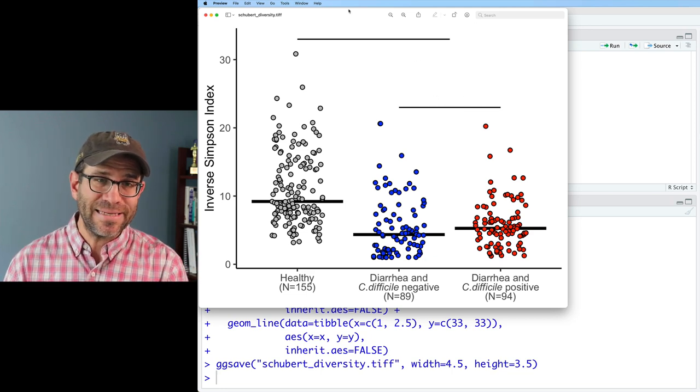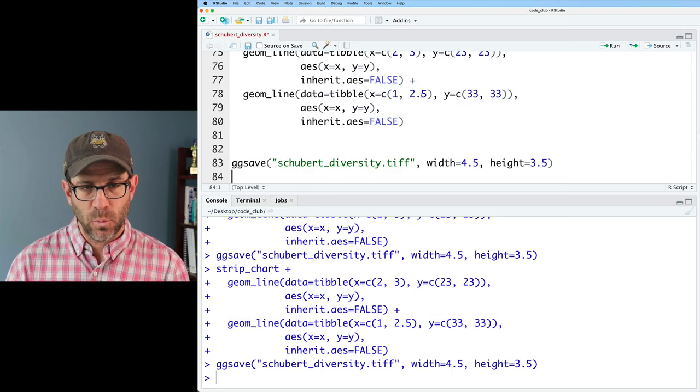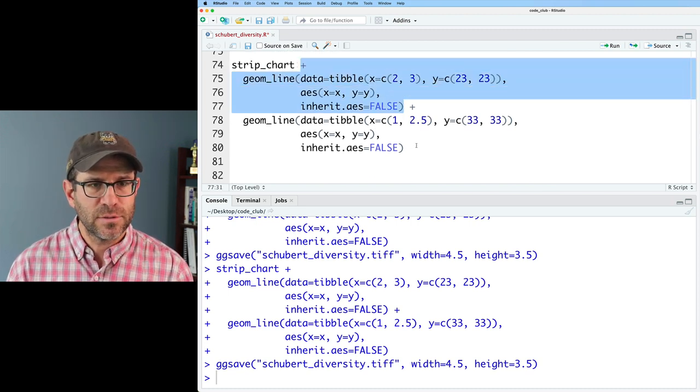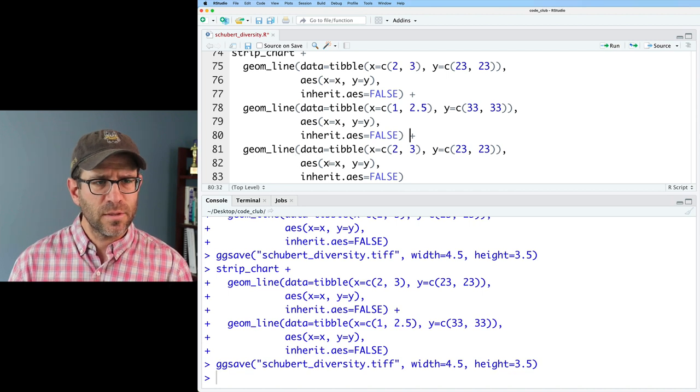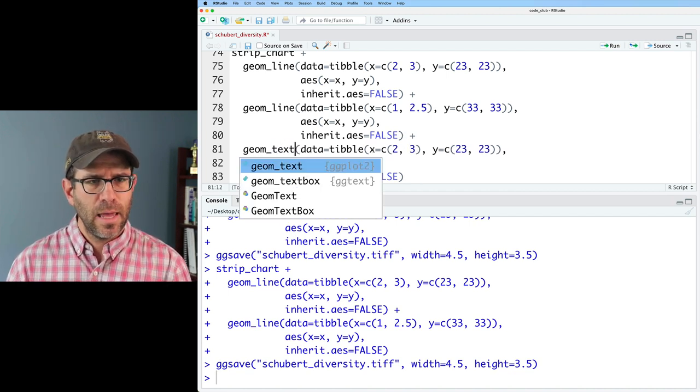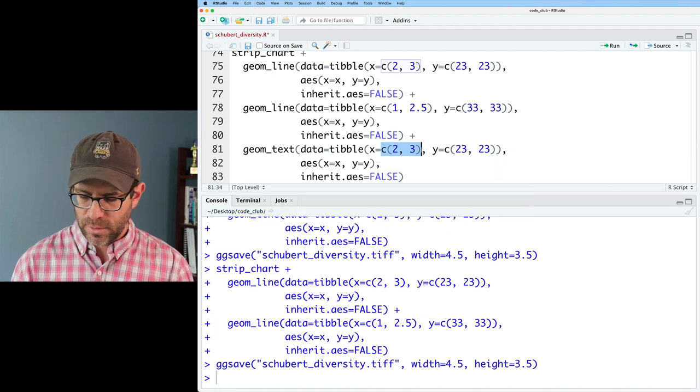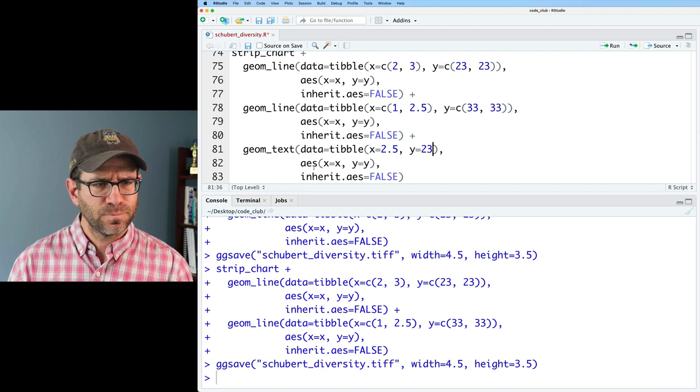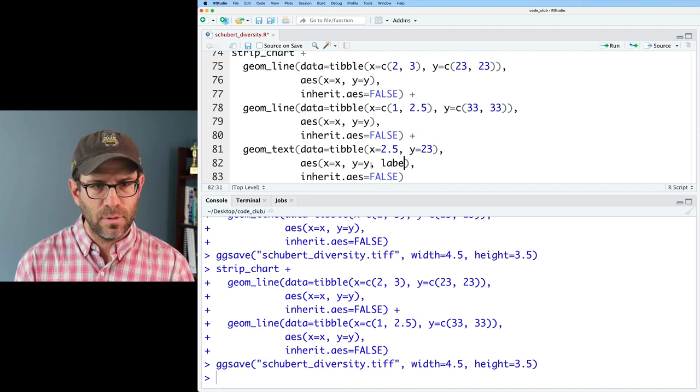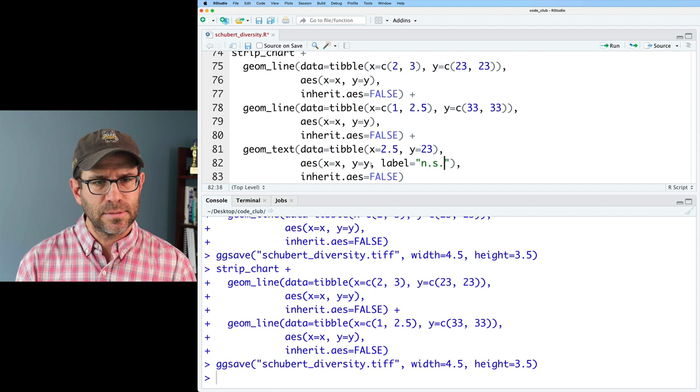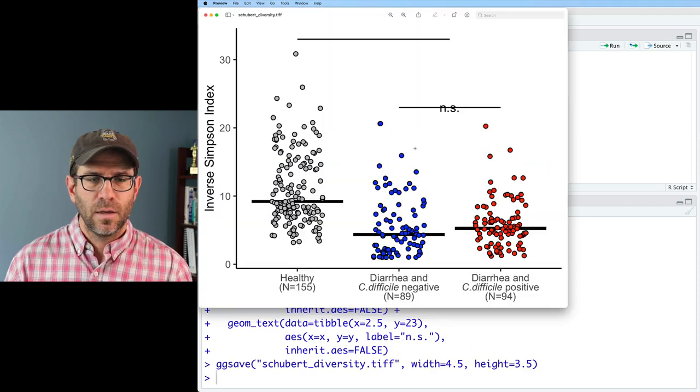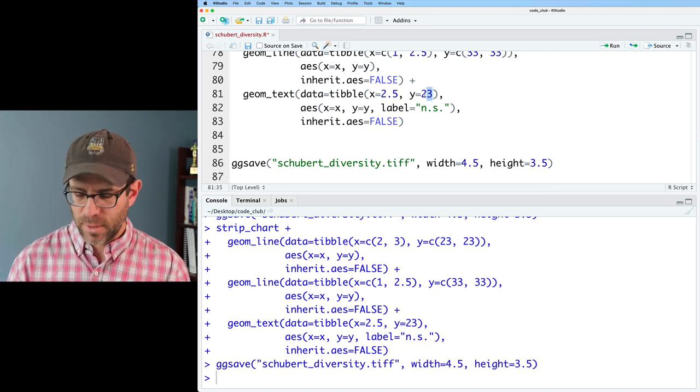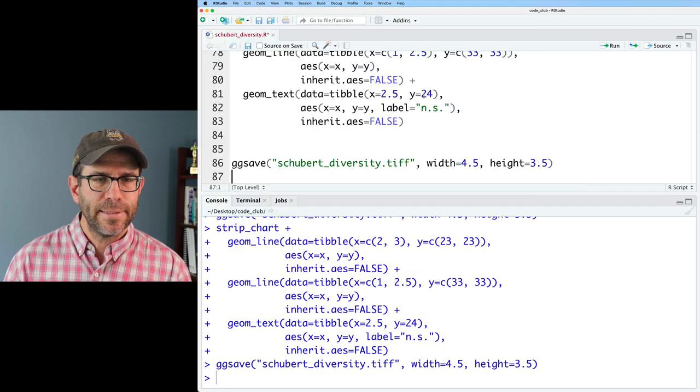What we'd like to do now is to annotate these lines with text in the middle. We can do that with geom_text. I will go ahead and copy this first geom_line and replace line with text. And my x-coordinate is going to be 2.5, and my y I'm going to for now make 23. And that looks good. Maybe I'll put label equals n.s. Let's give this a shot and see what happens. Great. So our NS is right on the line. We can probably bump that up a little bit by doing 24, and that looks great.